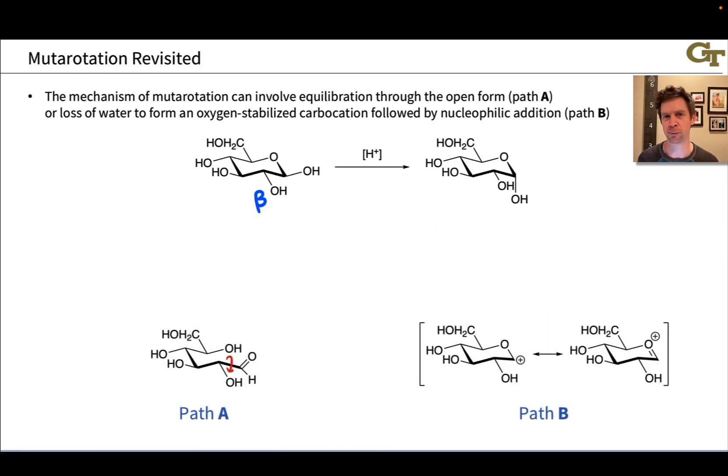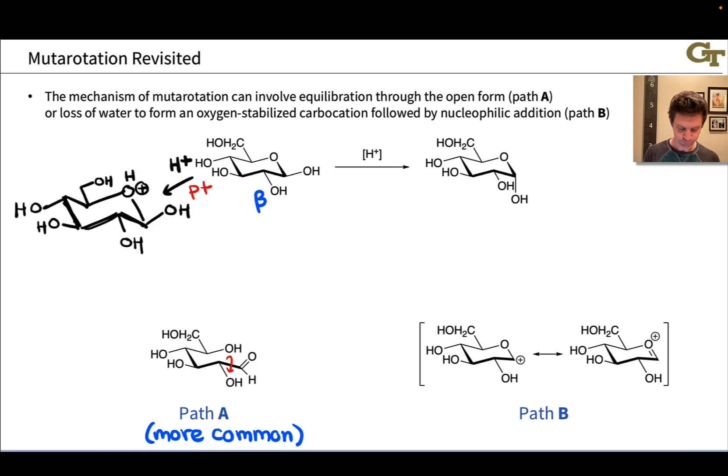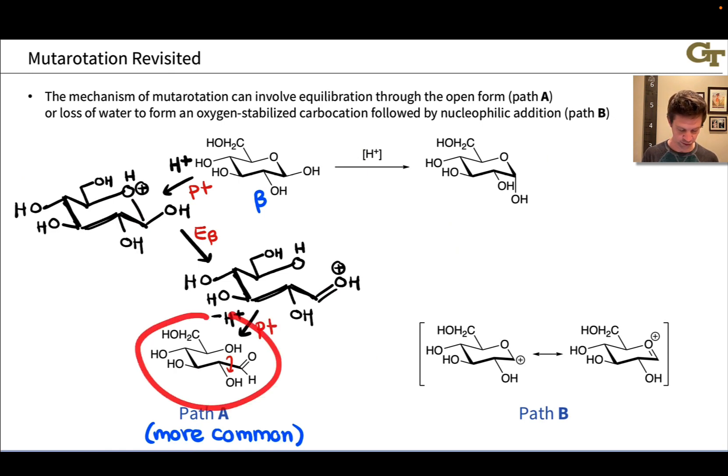But the typical mechanism of mutarotation and the one that you'll see, for example, if you go out there and Google undergraduate organic chemistry, bioorganic and biochemistry notes and books involves the open chain form. The open chain form is created via proton transfer of the oxygen inside the ring followed by a beta elimination. This cleaves the C-O bond in the ring and creates the C-O double bond here of the carbonyl group at the anomeric carbon. And then we lose a proton to get to the neutral open chain form.